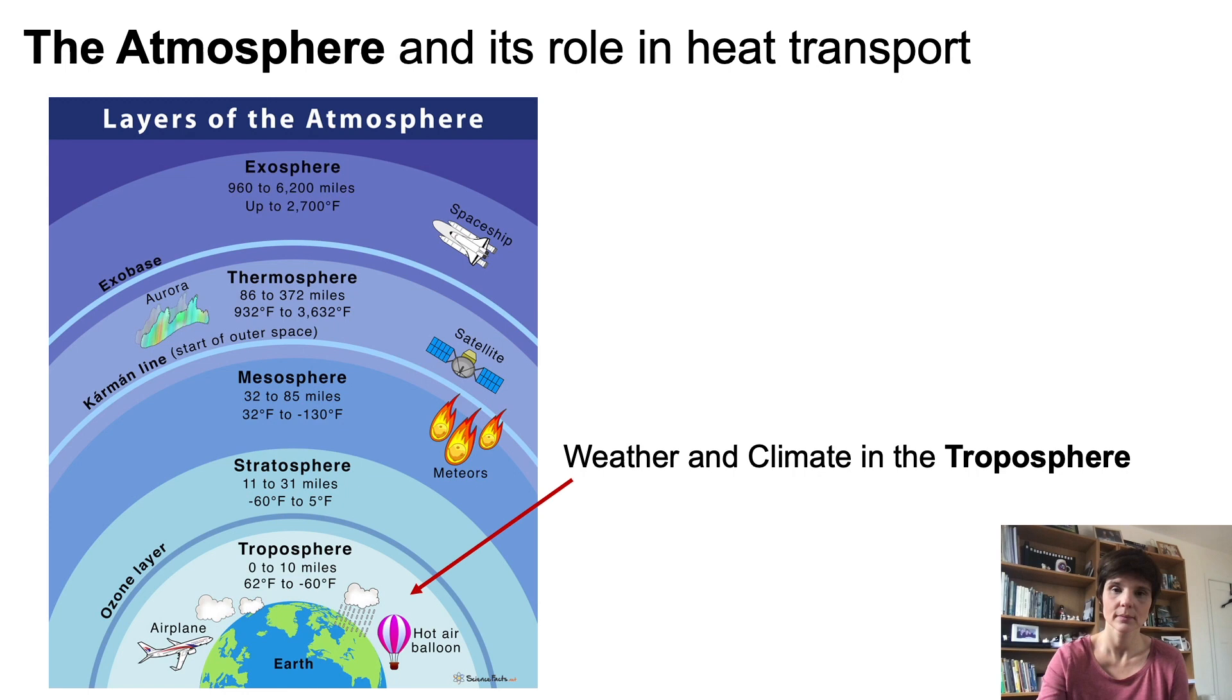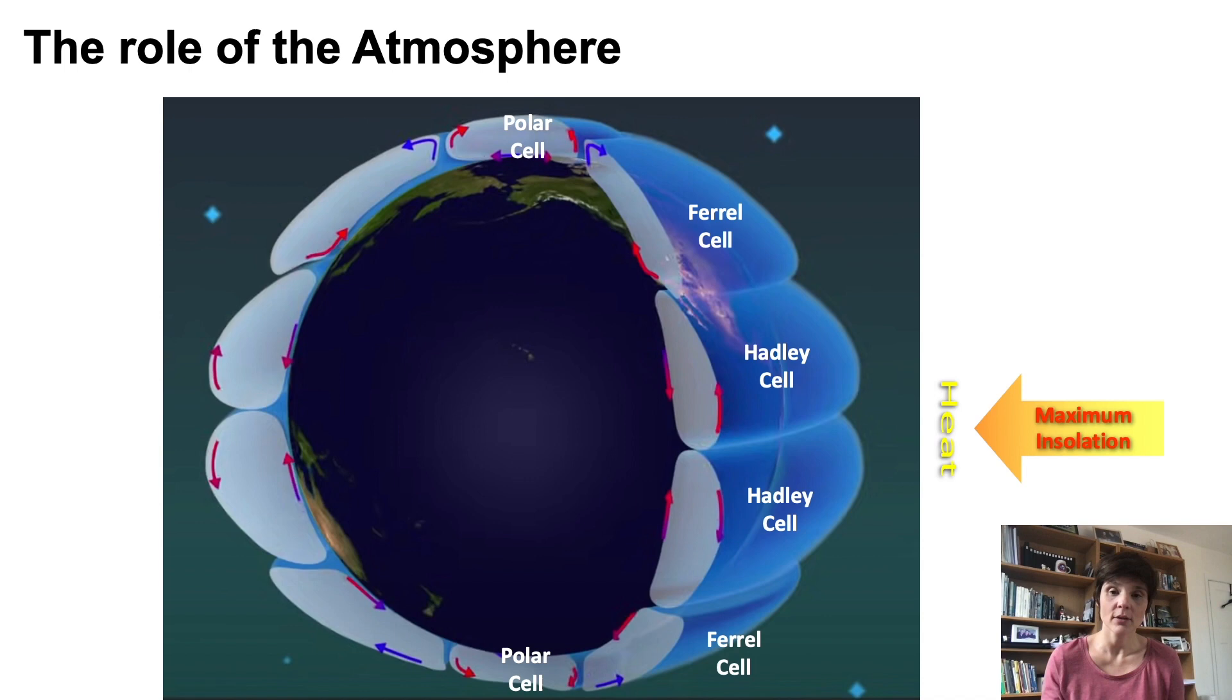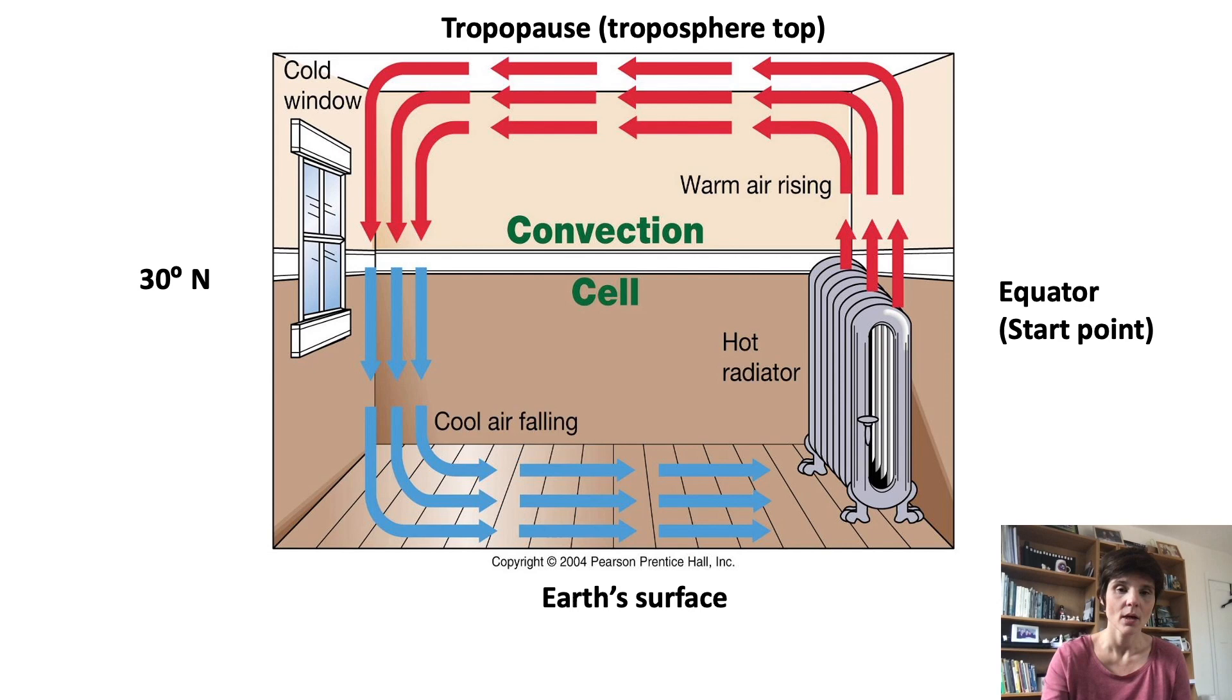The distribution of the heat from the equator to the poles in the atmosphere is a chain of air convection cells. So from the equator to the polar region, the heat moves through the air in three cells. The Hadley cells of the tropics, Ferrel cells at mid-latitudes and polar cells in the polar region in both the northern and the southern hemisphere.